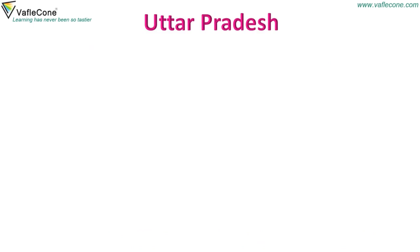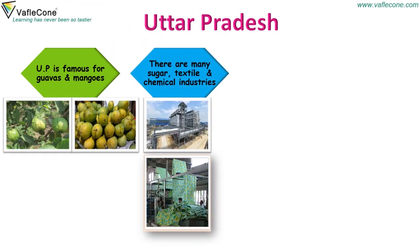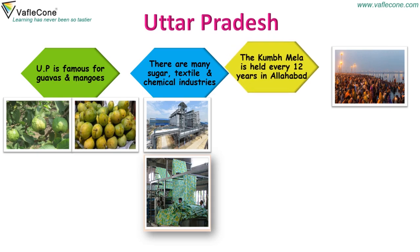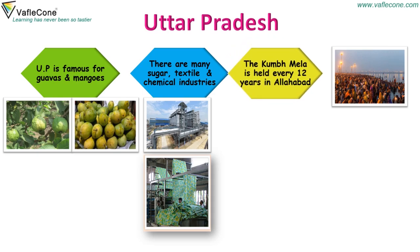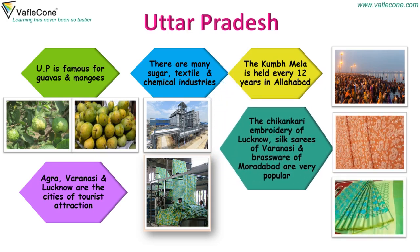Uttar Pradesh: Uttar Pradesh is famous for guavas and mangoes. There are many sugar, textile, and chemical industries. The Kumbh Mela is held every 12 years in Allahabad. Agra, Varanasi, and Lucknow are cities of tourist attraction. The Chikari embroidery of Lucknow, silk saris of Varanasi, and brassware of Muradabad are very popular.